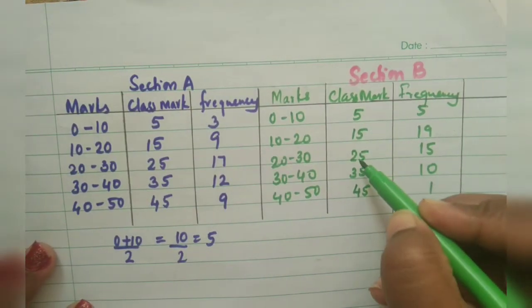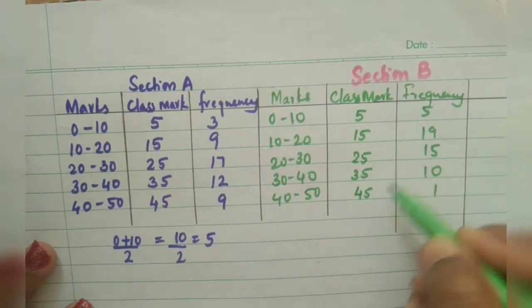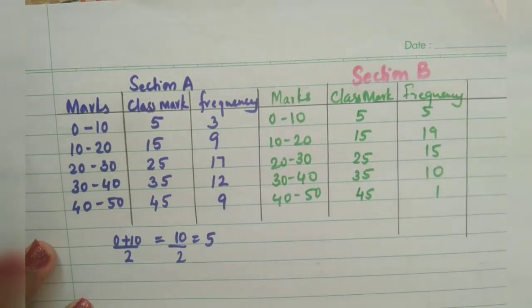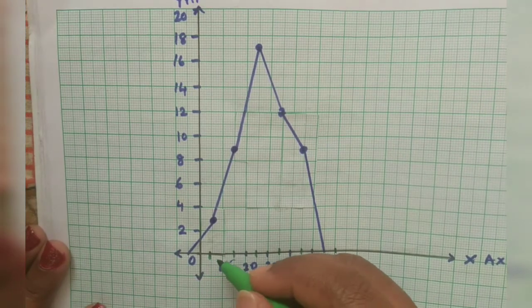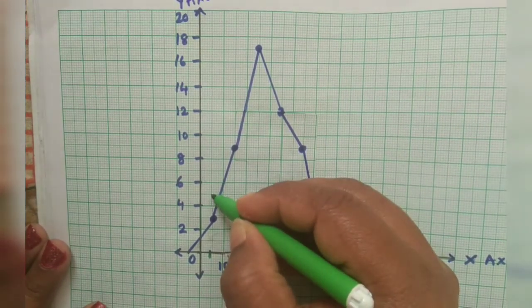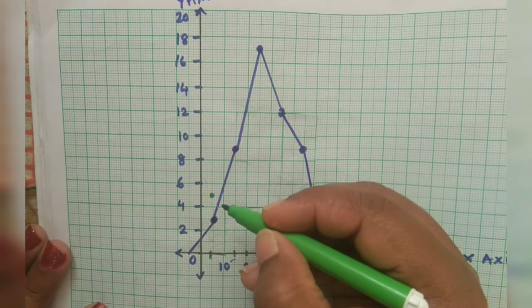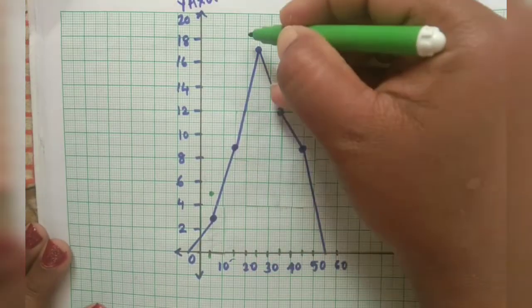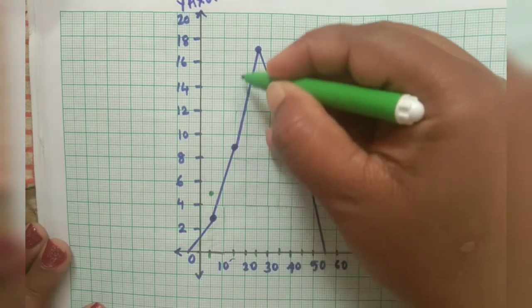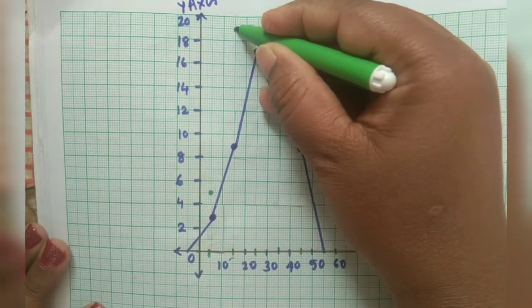Now let us see for the section B. As earlier it is the same. You have to make the class mark. It is 5, 15, 25, 35, 45 and so on. Now for the first one it is 5, it is already marked. Then for 15 it is 19.